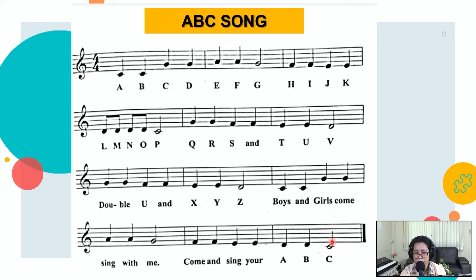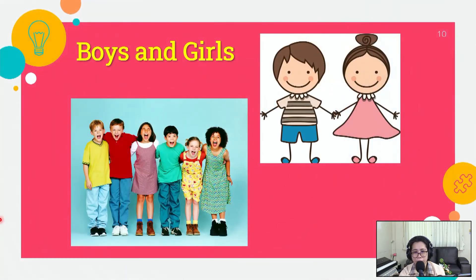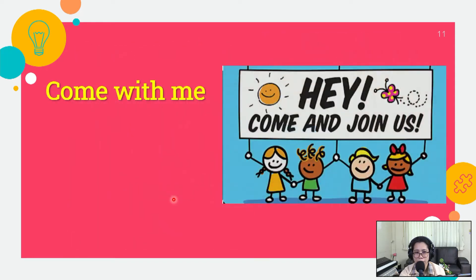Thank you for singing with us, dear one. Now, let us relearn the vocabulary words that we have started last time. We have 'boys and girls,' which means male is the boy and female is the girl. As you can see in the picture — boys and girls — there's more than one of them here. Next, 'come with me' means to come and join, go along, or go with them. That's another way of saying the phrase 'come with me.'